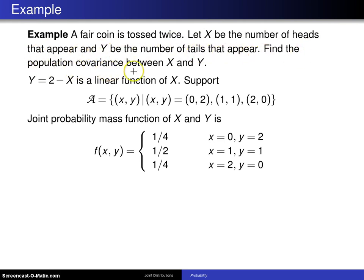Find the population covariance between X and Y. If we were looking at X alone and had a random experiment which is tossing a fair coin twice, from a previous chapter you would conclude that X is a binomial random variable with parameters n and p, which in this case are 2, the number of trials.